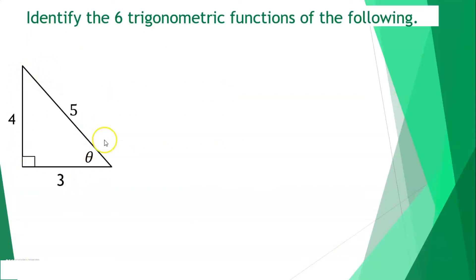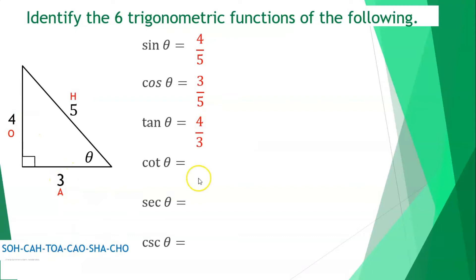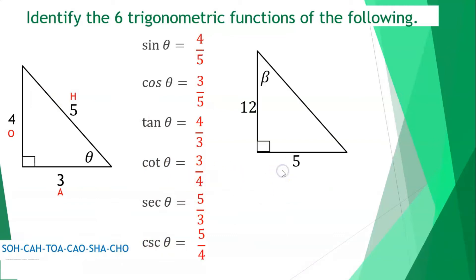Given a right triangle with side lengths 3, 4, and 5, with angle theta as reference: opposite is 4, adjacent is 3, and hypotenuse is 5. Sine theta = 4/5. Cosine theta = 3/5. Tangent theta = 4/3. Cotangent theta = 3/4. Secant theta = 5/3. Cosecant theta = 5/4.